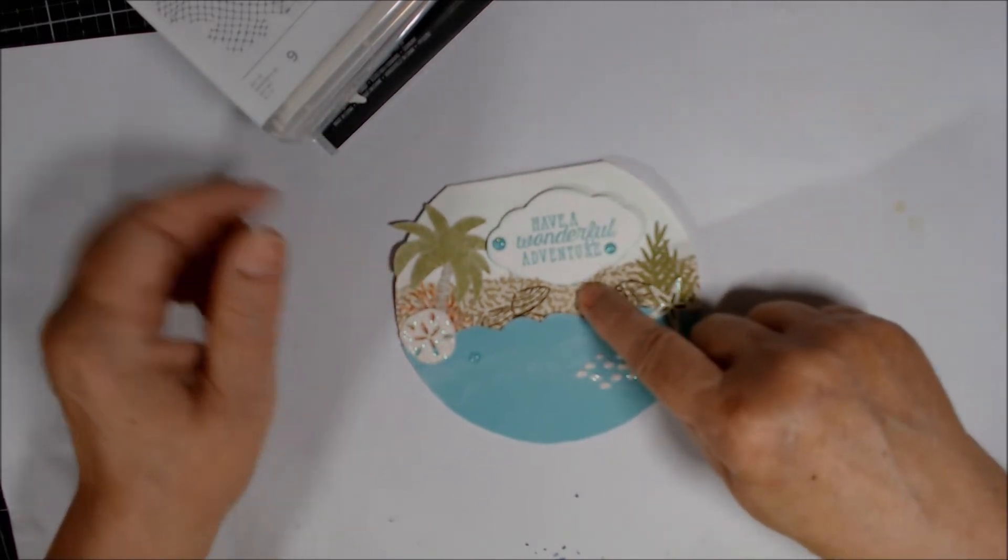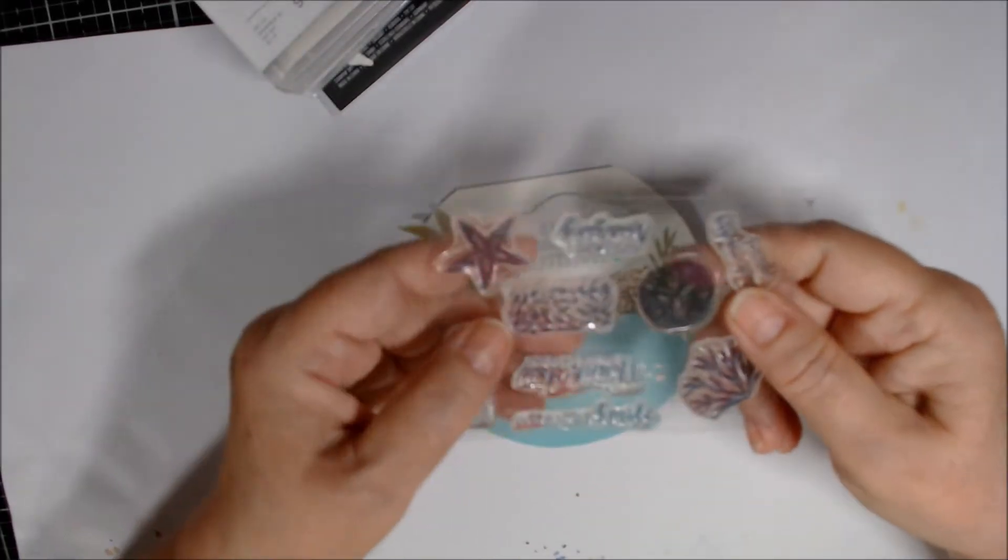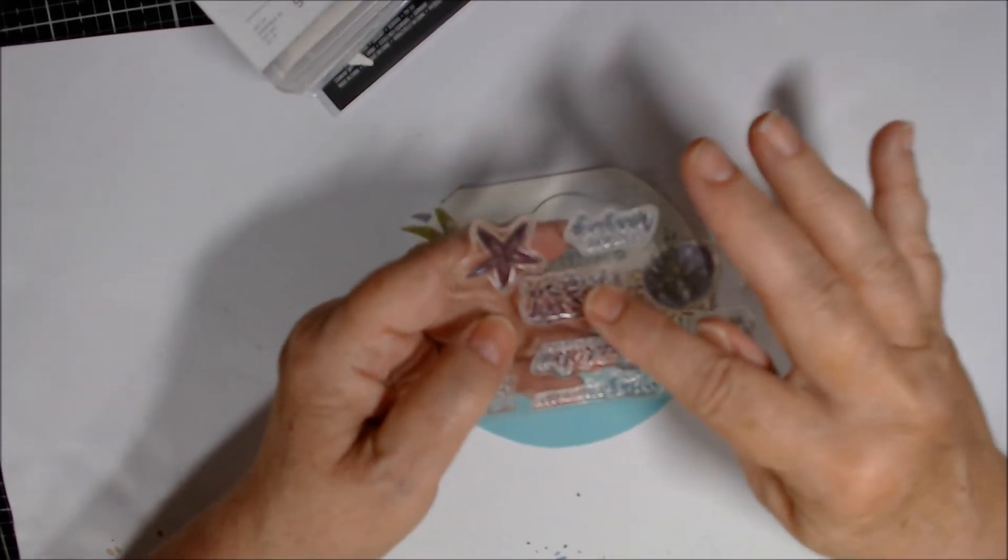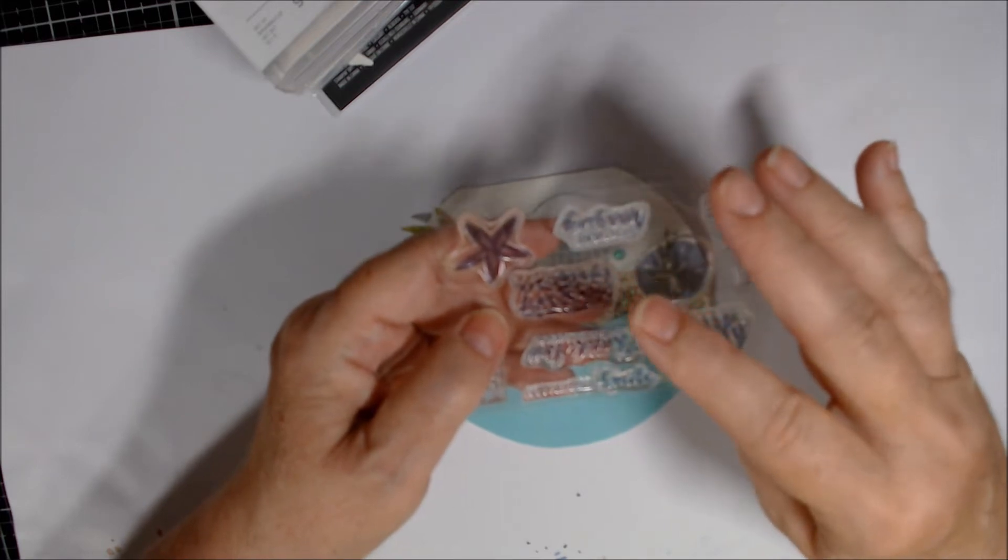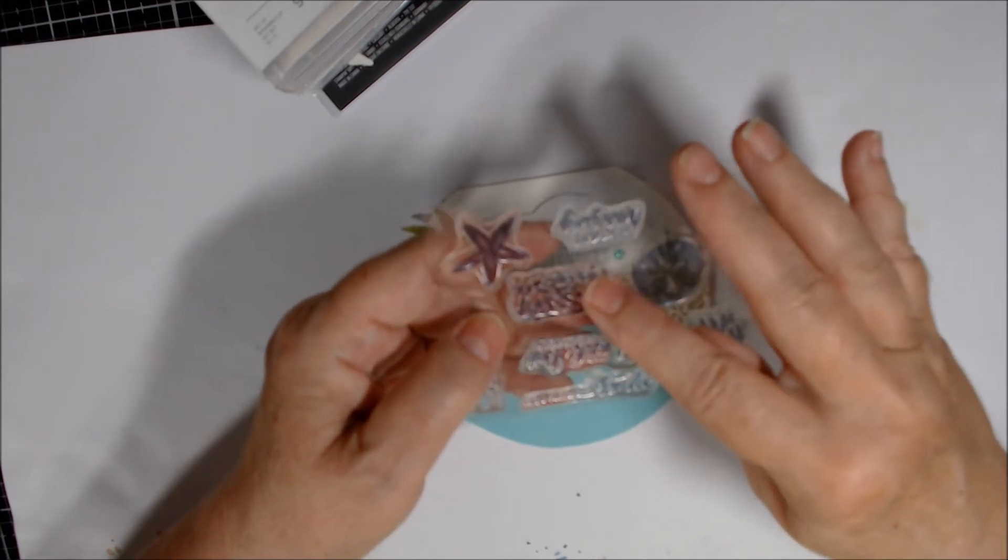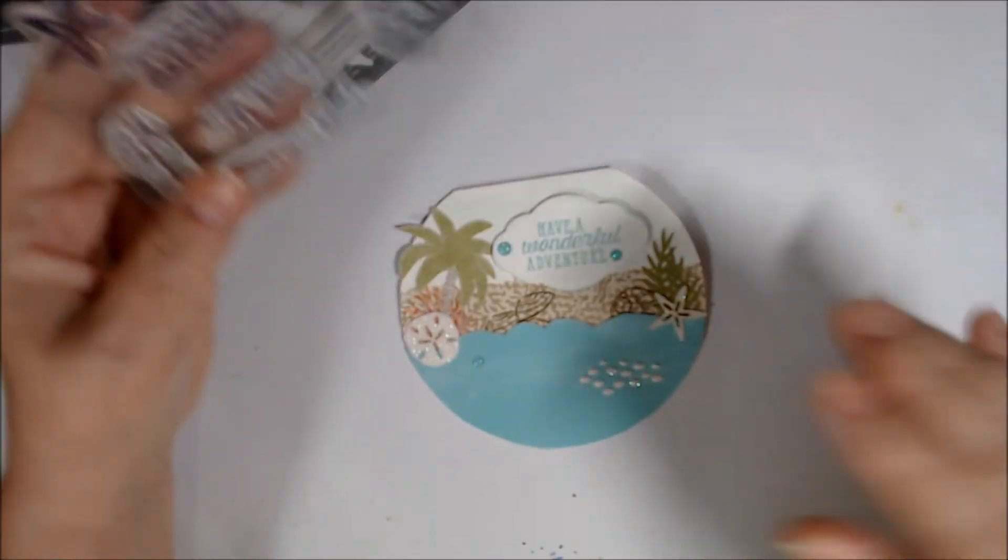And this you might recognize as the sandy part, or whatever it was, from the Paper Pumpkin Kit. So I stamped that in Crumb Cake.